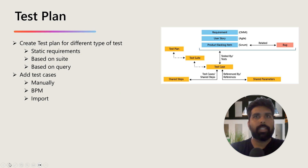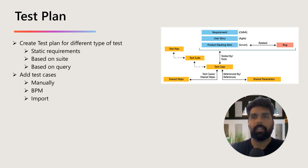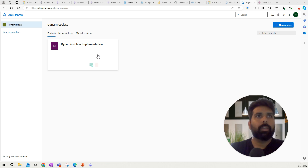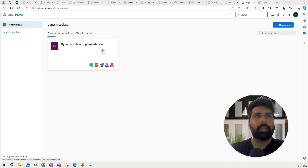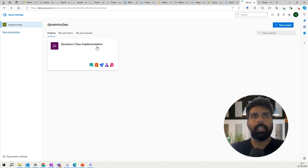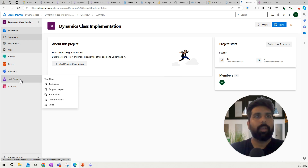Now let's talk about how you create the test plan and the different options available as a Functional Consultant — we'll create a few test cases manually, look at the import option, and in the next video I'll cover how to create test cases using the BPM library in Azure DevOps. Right now I am on my Azure DevOps portal; I have created a project called, for example, 'Dynamics Class Implementation,' which could be your own project.